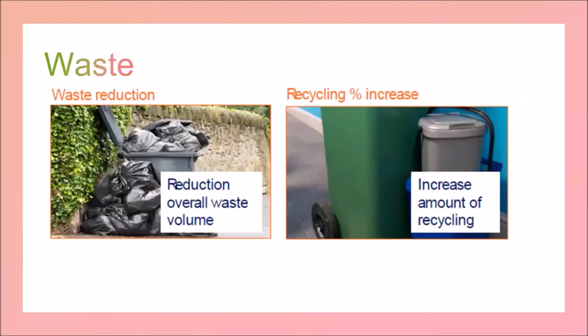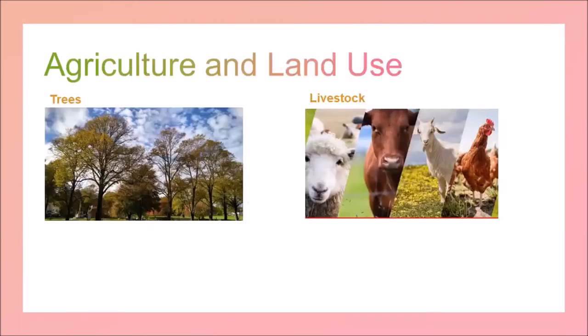Waste reduction is quite a small aspect as far as carbon emissions are concerned, but it involves reducing overall waste volume and increasing recycling. On agriculture and land use, the model proposes that the wooded land area of the Chichester District is increased by 30% by 2030. Chichester District is already one of the most wooded districts in the country, so that's quite a significant change.